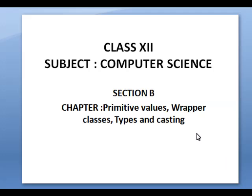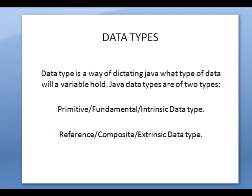Students, the next chapter is primitive values, wrapper classes and typecasting in Java. First of all, we are going to see what are data types. Data type is a way of dictating Java what type of data a variable will hold. If it is an integer variable, then float means float, string means string, character means character. So this is called data types. The variable will hold a value and the data type will indicate whether it is an integer, float, character or string value.